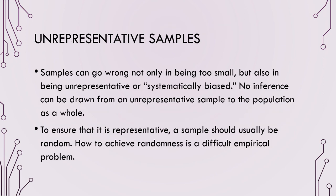The other way samples can go wrong is having an unrepresentative sample. Samples can not only be too small but also systematically biased. To ensure a sample is representative, it should usually be random. Randomness is a difficult empirical problem to solve, which is why psychological studies often conduct double-blind studies, where the person conducting the experiment is also unaware of what is being looked at, so their bias cannot play into how the experiment is conducted.